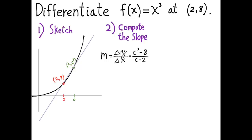Now we've computed the slope of the secant line, and the third step, oh, and by the way, this is a quotient of two differences. c cubed minus 8 is a difference, and c minus 2 is a difference, so we call this a difference quotient.